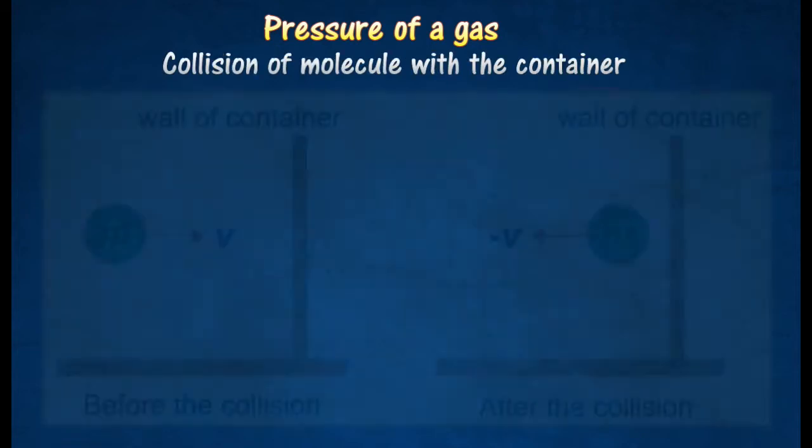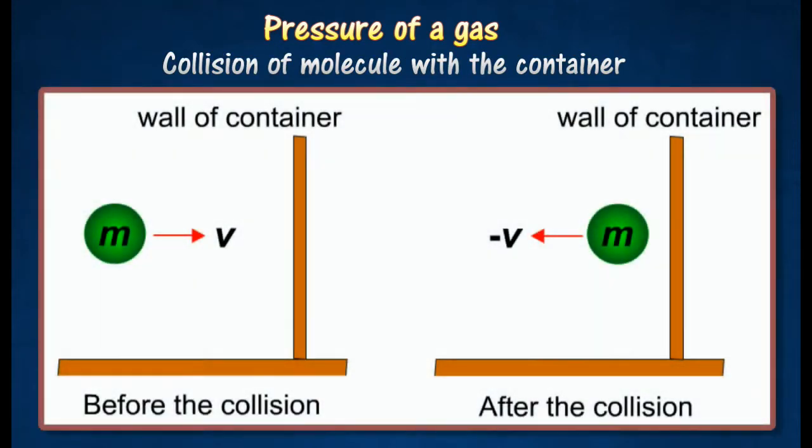Consider the following diagram. Assume that a molecule of mass m with a velocity v experiences an elastic collision with the wall of a container. The molecule rebounds with the same speed v but in the opposite direction.